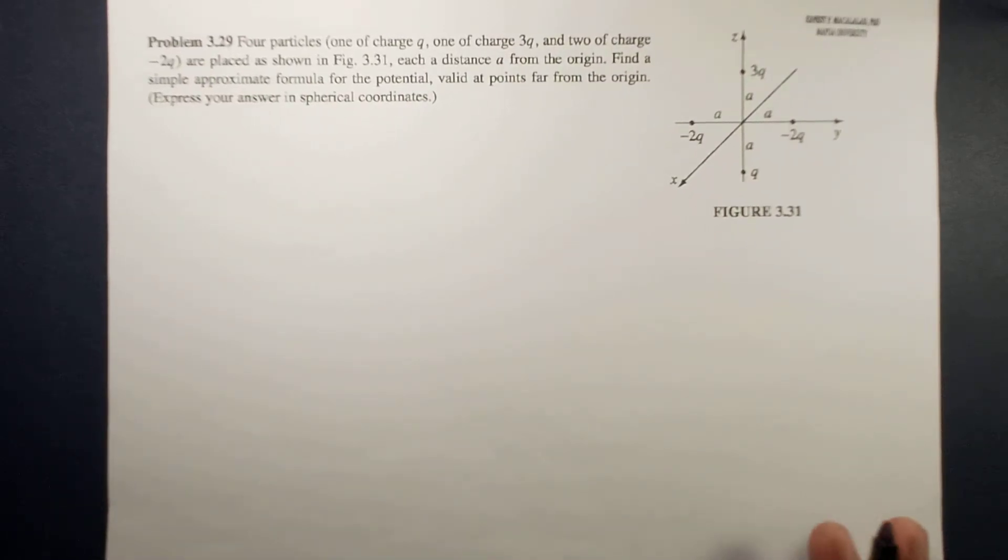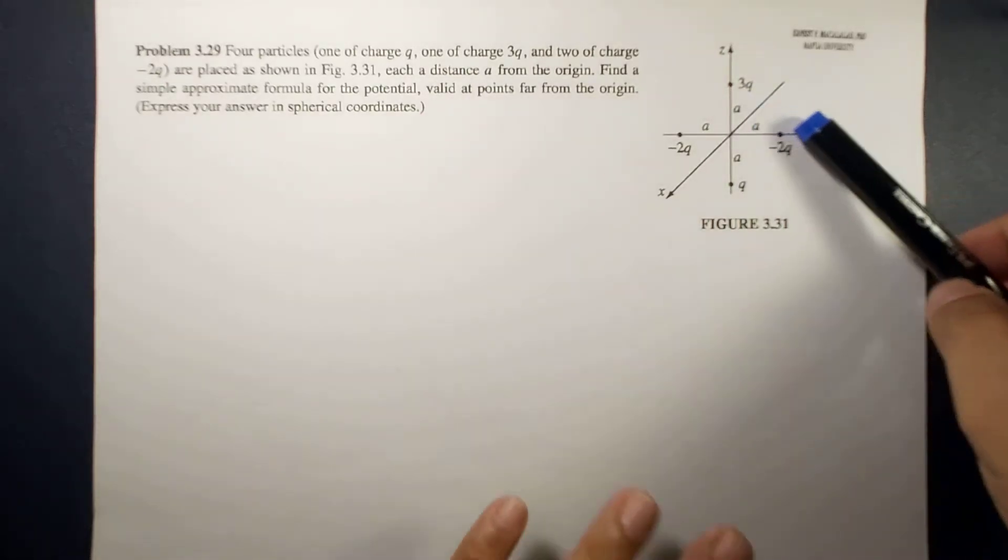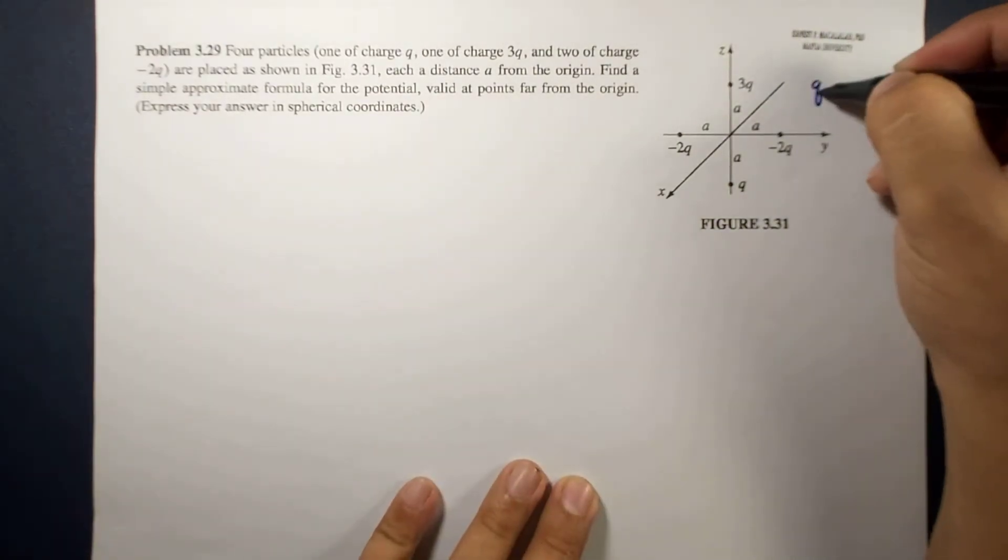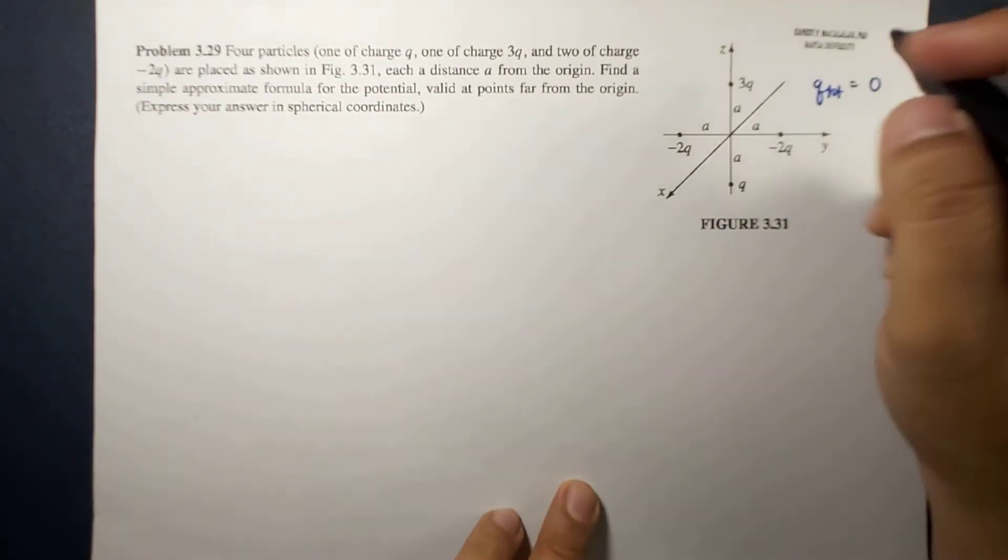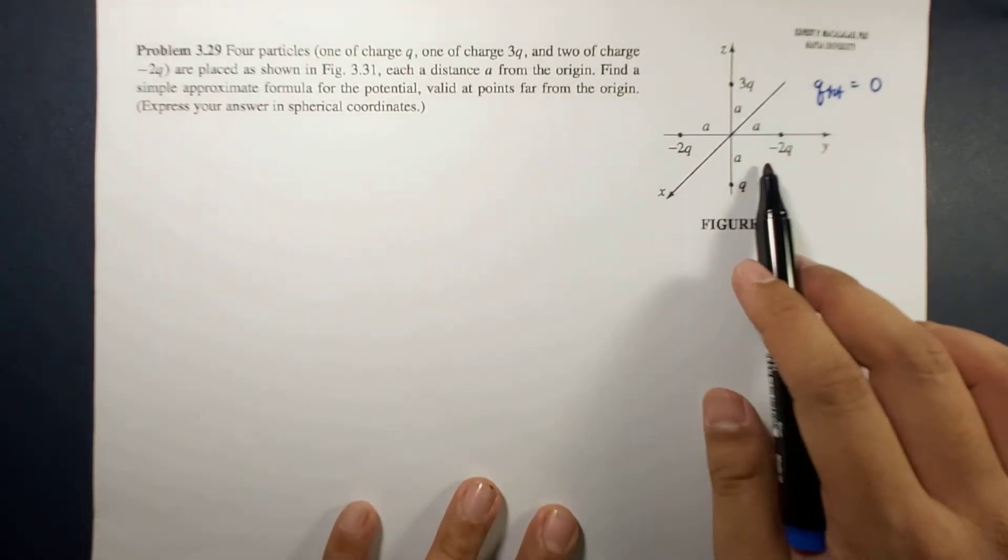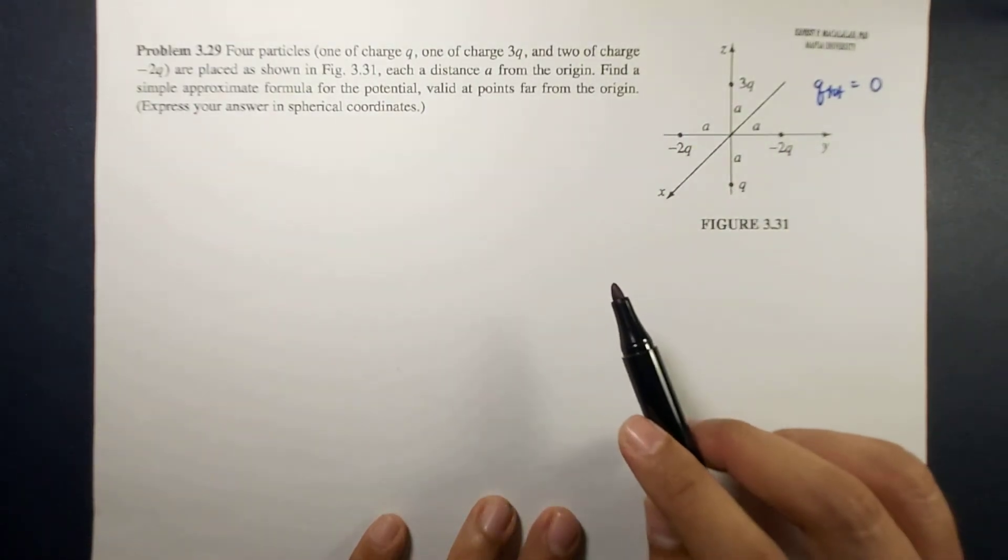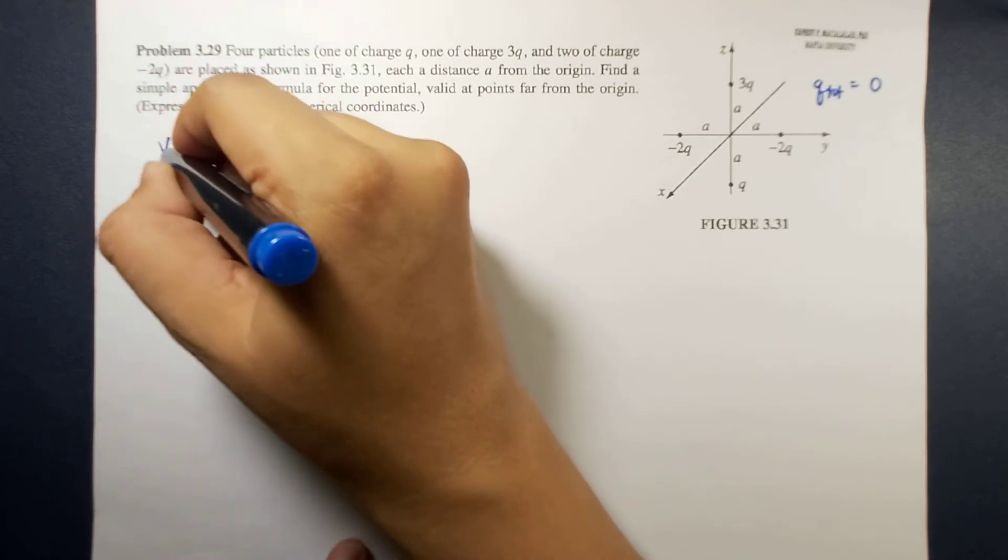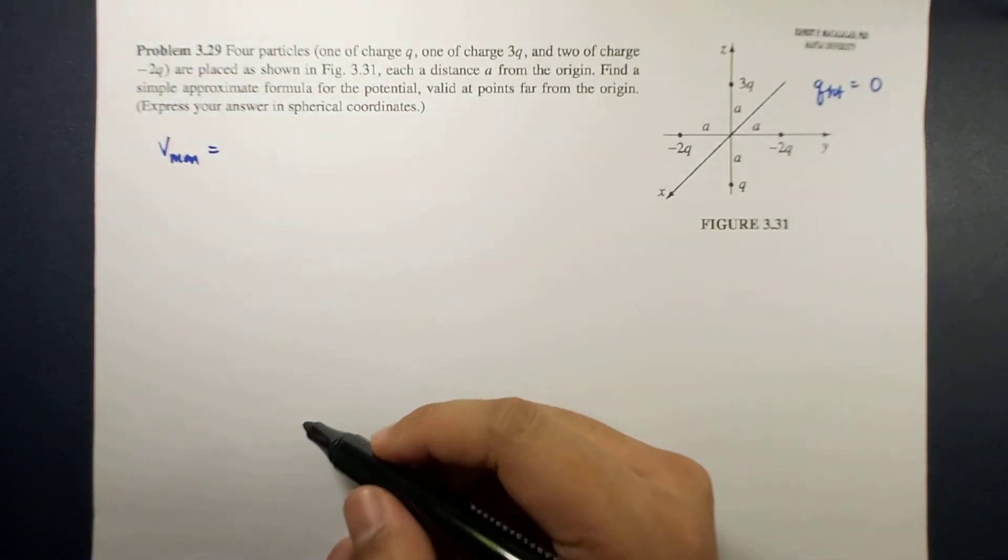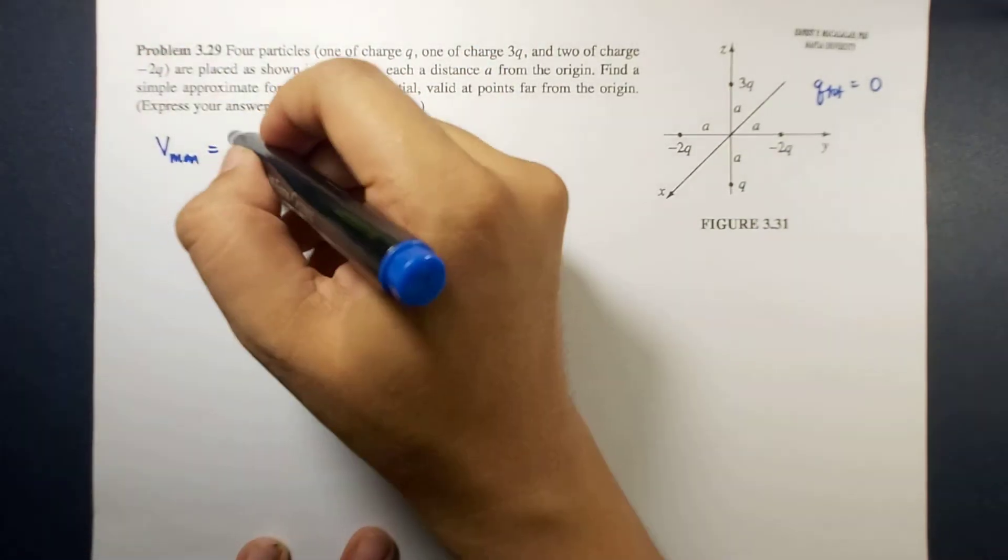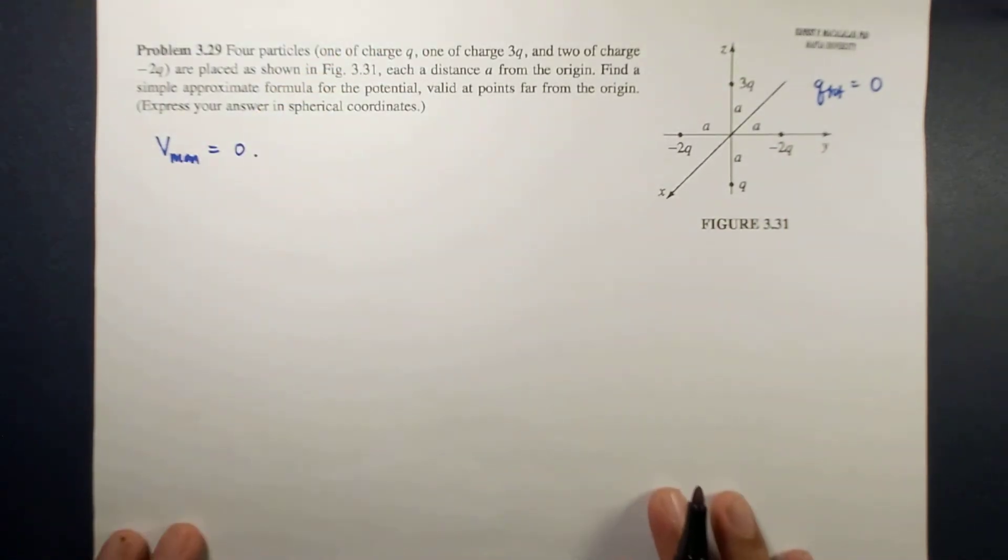Notice that if we look at the total charge, the total charge is zero. What does it mean if the total charge is zero? At points far away from it, this will not look like a single charge. That means the monopole term or the monopole contribution to the approximate potential will be equal to zero. So the next approximation will be a dipole.